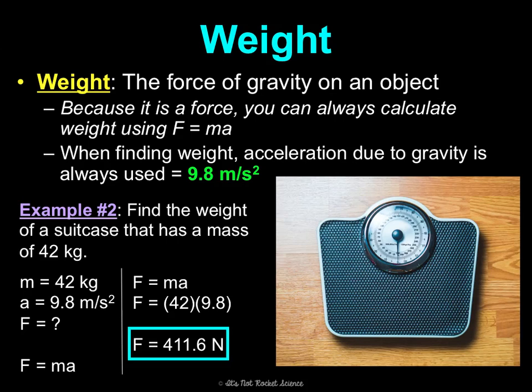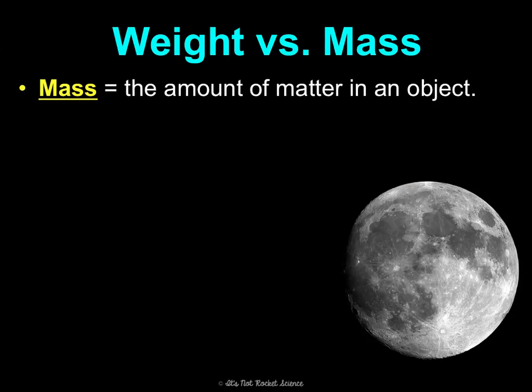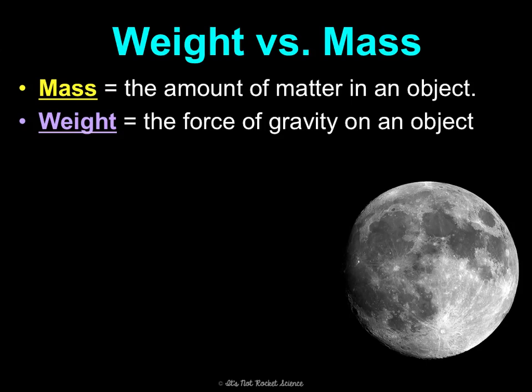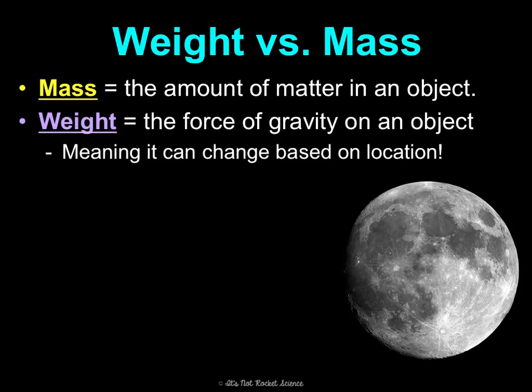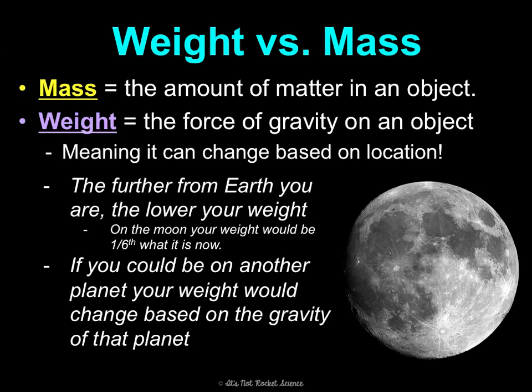Weight and mass are often used interchangeably, but that is incorrect. Mass is the amount of matter in an object, whereas weight is the force of gravity on an object, meaning it can change based on location. The further from Earth you are, the lower your weight. On the Moon, your weight is one-sixth what it is on Earth because the Moon's gravitational attraction is one-sixth that of Earth. On Jupiter, you would weigh twice as much because the gravitational force there is twice as great.